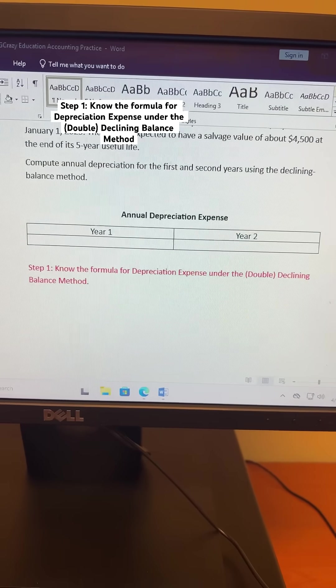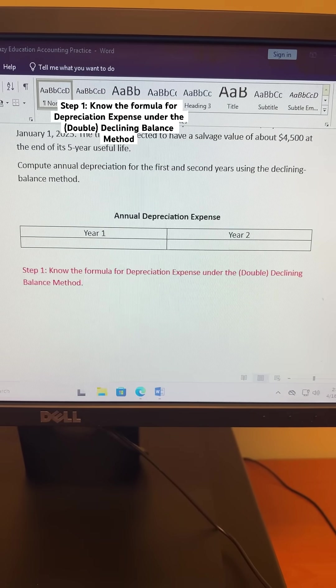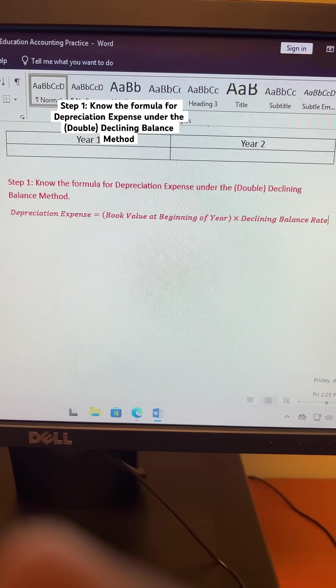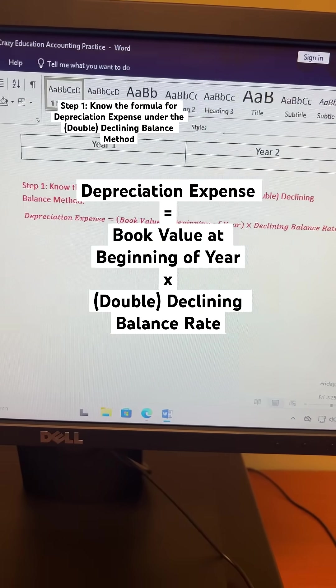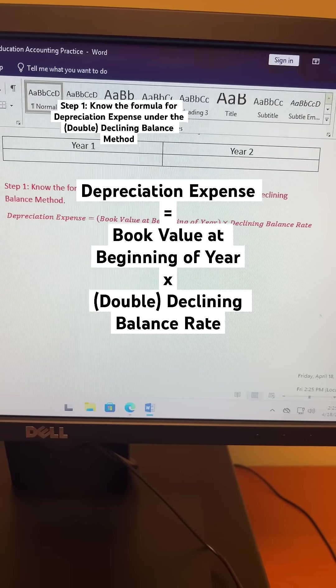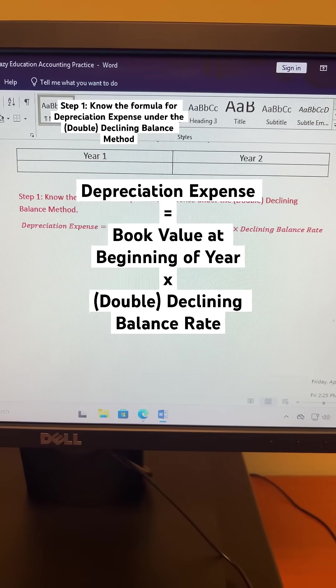Step 1 is to know the formula for depreciation expense under the declining-balance method. Your depreciation expense under the declining-balance method is equal to the book value at the beginning of the year times the declining-balance rate.